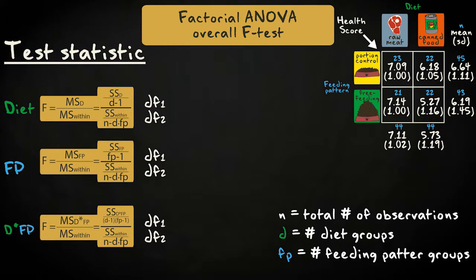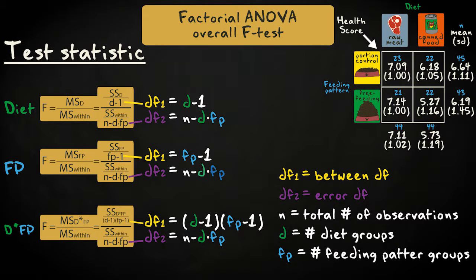Each F statistic is associated with two degrees of freedom. The error, denominator, or within degrees of freedom are the same for all effects. The numerator, or between degrees of freedom, depend on the effect. They're the values we use to divide the sums of squares by when we calculate the appropriate between-group variances.